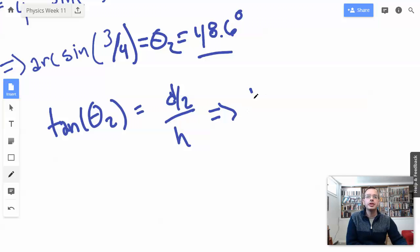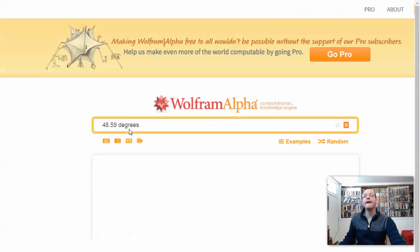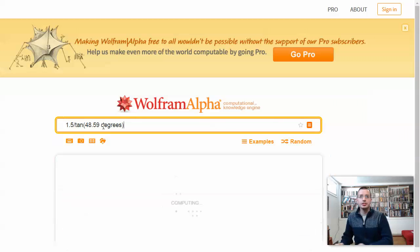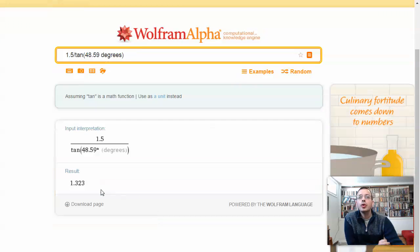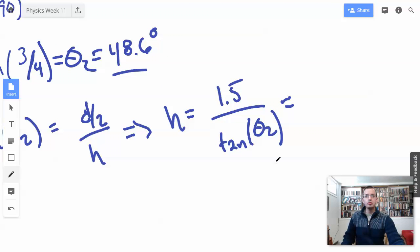So therefore, the depth is h equals 1.5, which is 3 divided by 2, over tangent of theta 2. 1.5 divided by tangent of this. 1.3, ah, I went the wrong direction. 1.323. Just reasonable depth. It's like 4 feet. 1.323 meters.